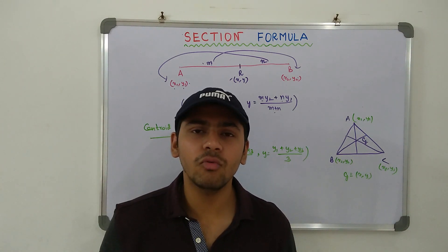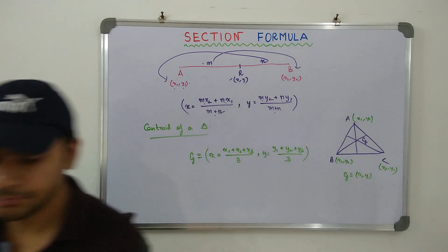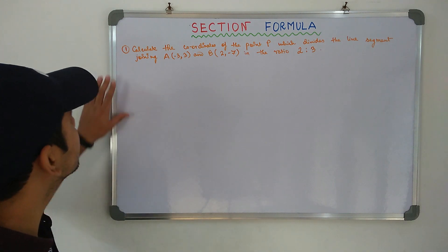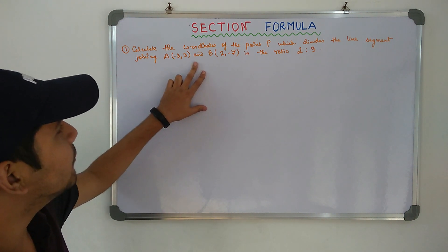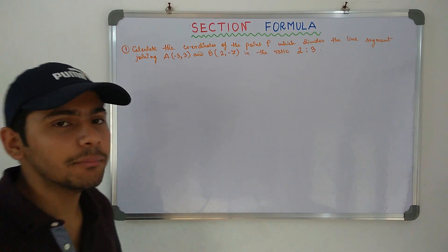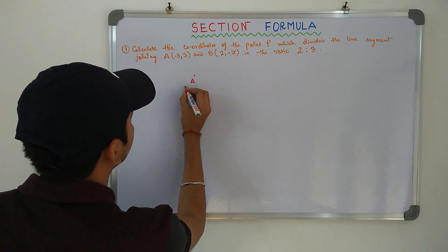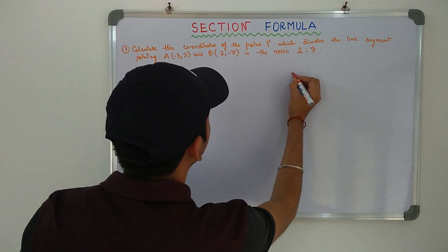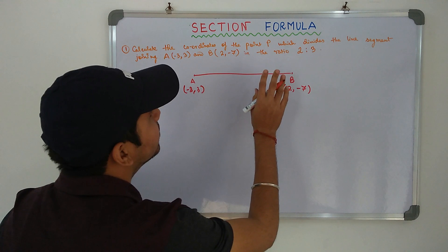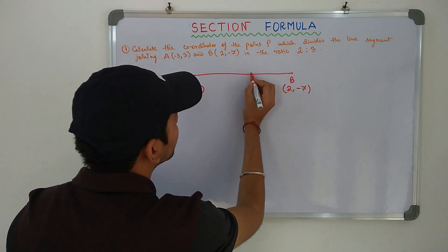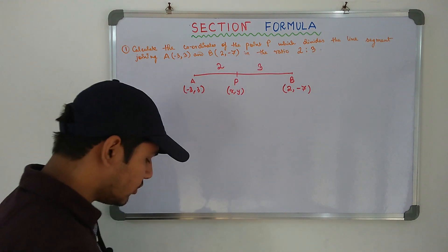I hope you have understood all this. Now we will move on with a few basic sums based on these topics. Let's begin with the first sum. Number one: calculate the coordinates of the point P which divides the line segment joining A(-3, 3) and B(2, -7) in the ratio 2 is to 3. So a very simple problem in which you have to just apply the formula. Let me draw the line first.